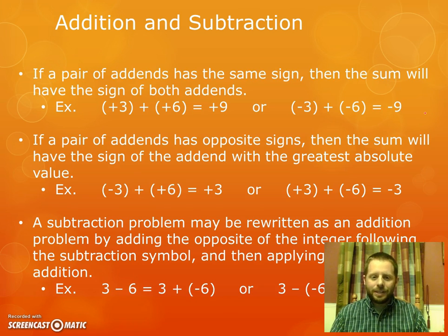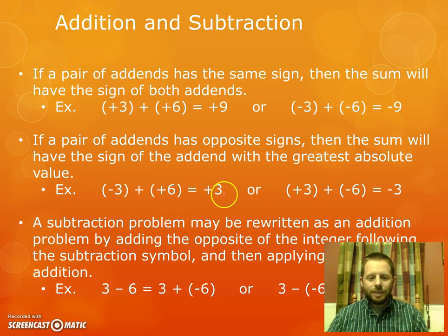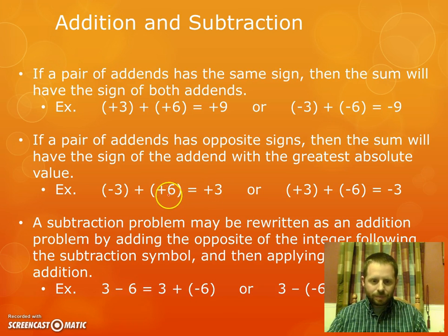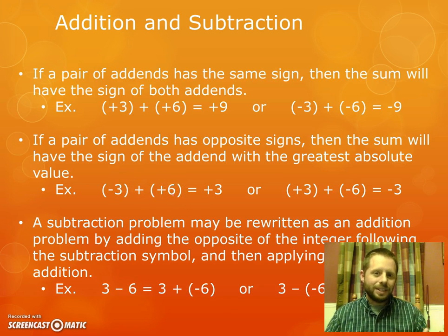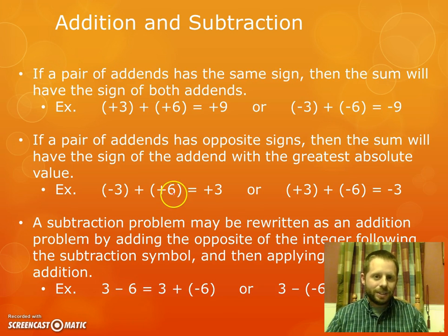The next one says if a pair of addends has opposite signs, then the sum will have the sign of the addend with the greatest absolute value. So here in this first example, we're adding negative 3 and a positive 6. So you can see the signs are different. One's negative, one's positive. So we're actually going to take the difference of those two numbers. So 6 take away 3 gives us 3. Now, to determine what the sign is, we have to look at which of these is a larger value. 6 is a larger value than 3, correct? It has a larger absolute value than 3. Keep in mind, when I say absolute value, I'm just saying the distance the number is from 0. So 6 has a greater distance from 0 than 3. And so that tells me my final result should be positive.